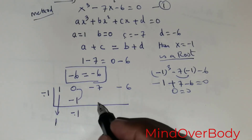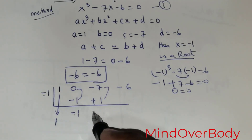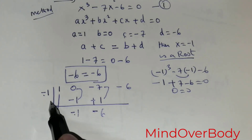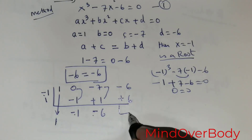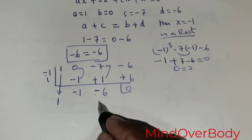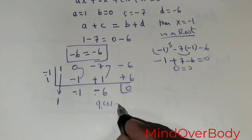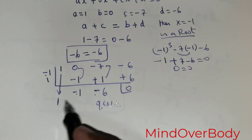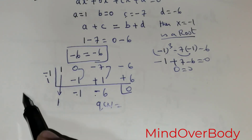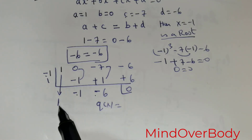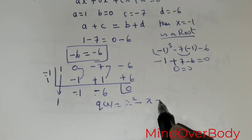Multiply negative 1 by negative 1 to get positive 1. Add positive 1 with negative 6 — that gives negative 5. Add them up; you get 0. Now rewrite the quotient, which starts at degree 2: x squared minus x minus 6.